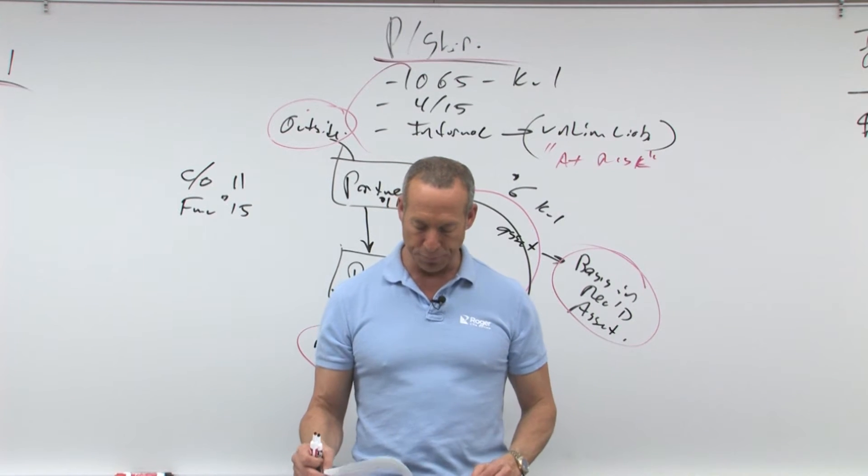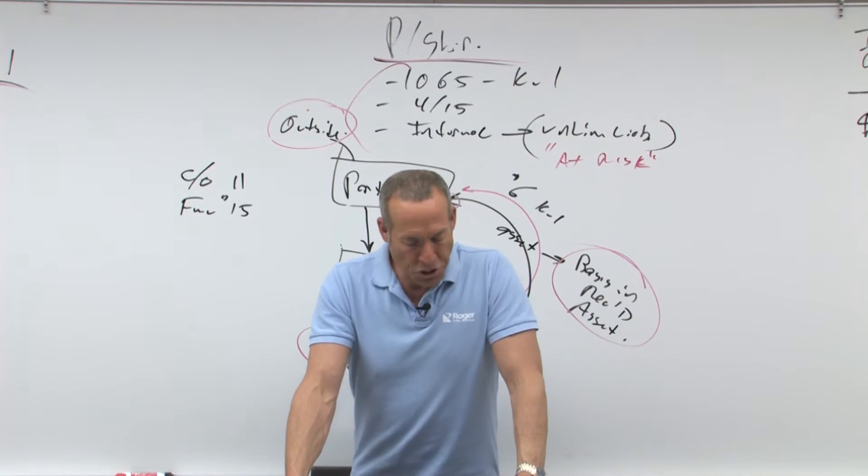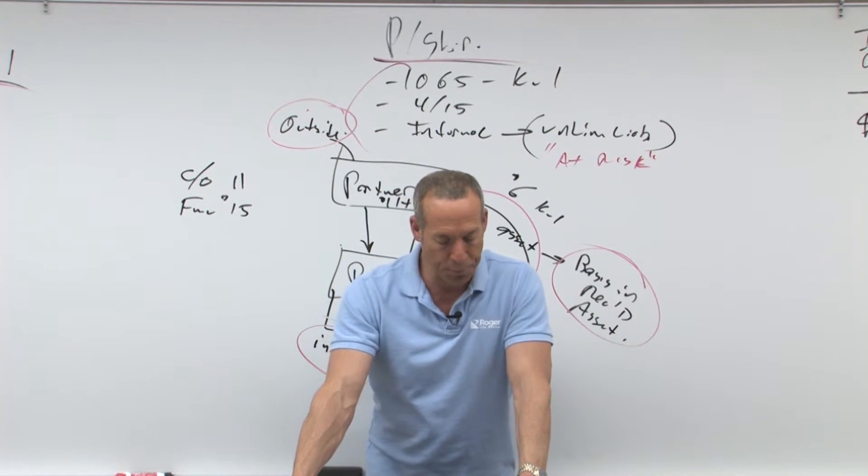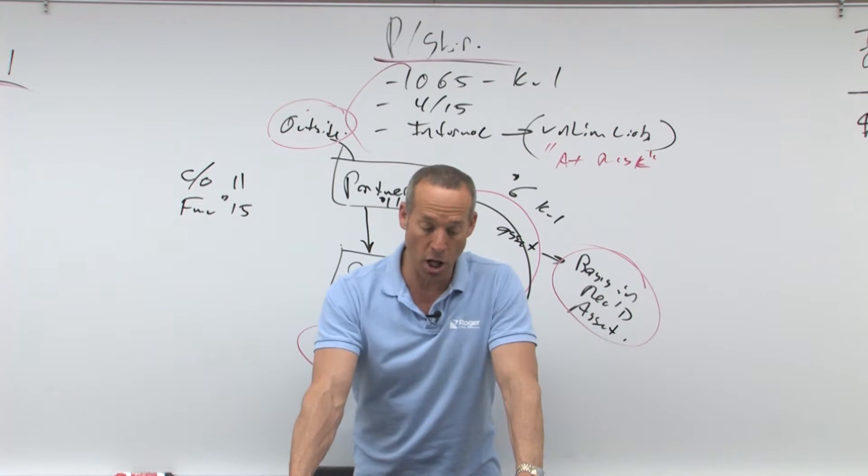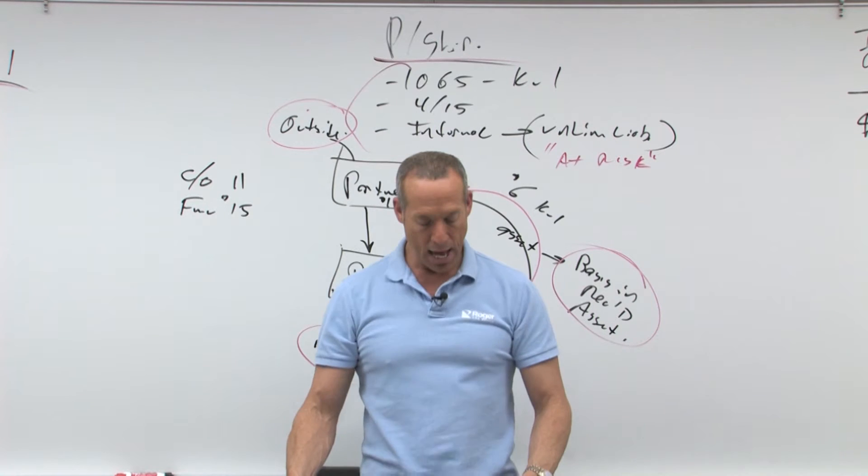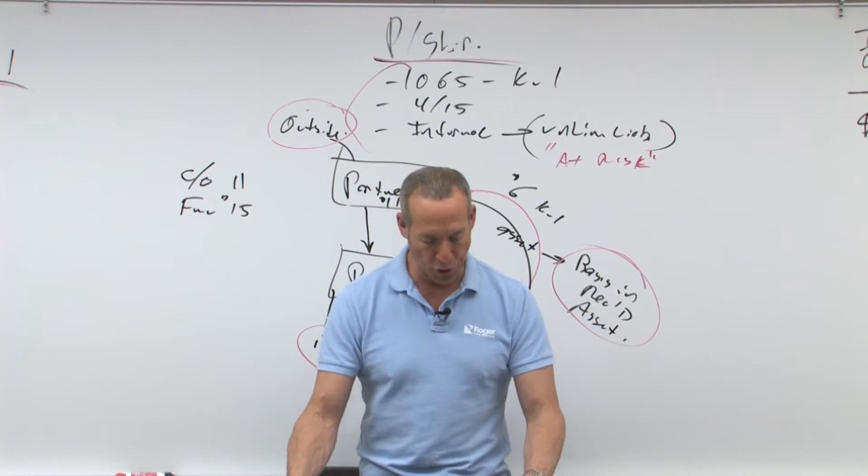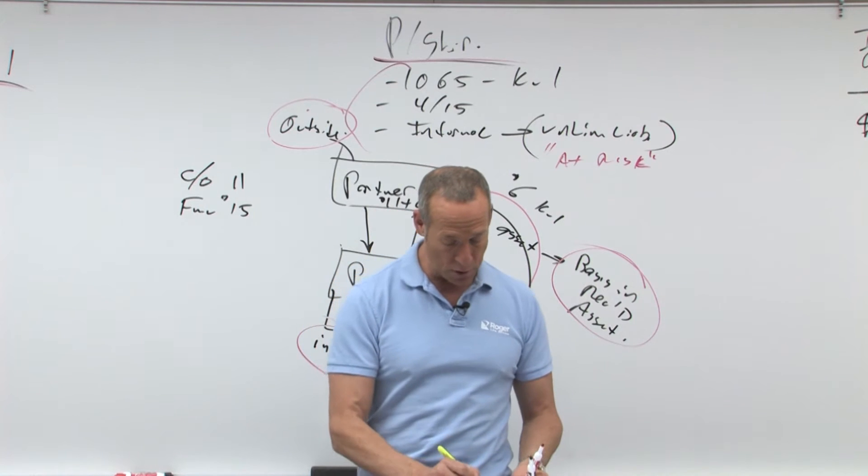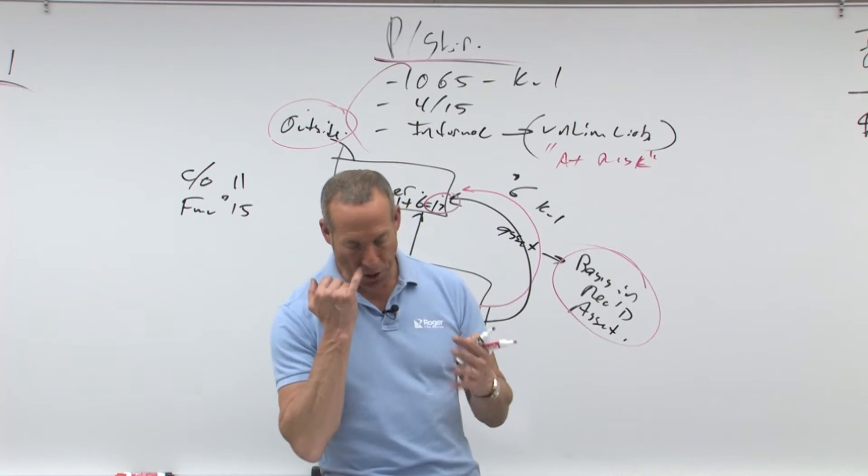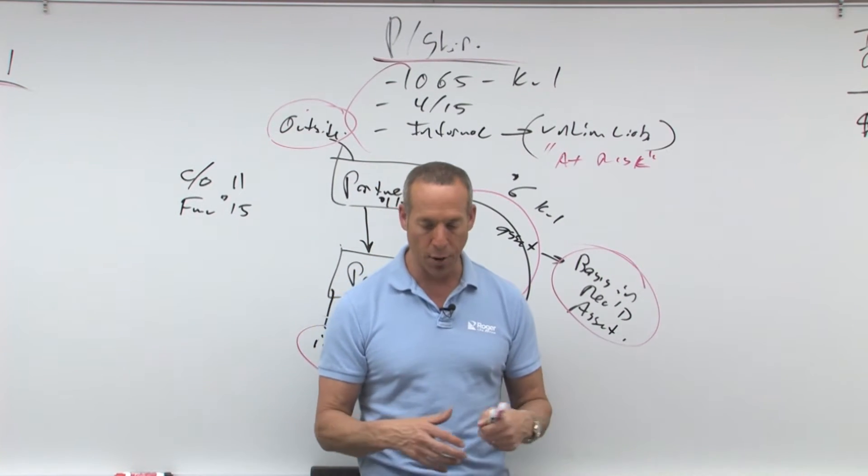Let's look at this example in your notes. It says, for example, assume that ABC partnership is formed with three equal partners A, B, and C. A and B each contribute $100 cash. C contributes land with a tax basis of $80 and a fair value of $130, subject to an unpaid mortgage of $30 that is being assumed by the partnership. So we have these three partners, and we're trying to see what's happening as far as at risk.